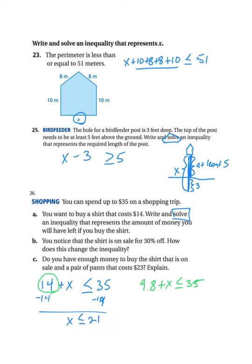Then the last part is do you have enough money to buy the shirt that's on sale? So the $9.80 shirt and a pair of pants that cost $23. So what you need to do is solve this inequality that we just wrote. And we get X is less than or equal to 35 minus $9.80. So that means we have $25.20 left. So yeah, we do have enough money to buy this pair of pants. Assuming that we don't have to pay tax on it. We won't worry about that for now.